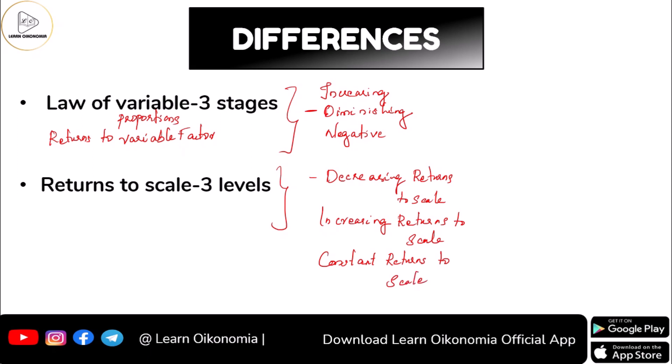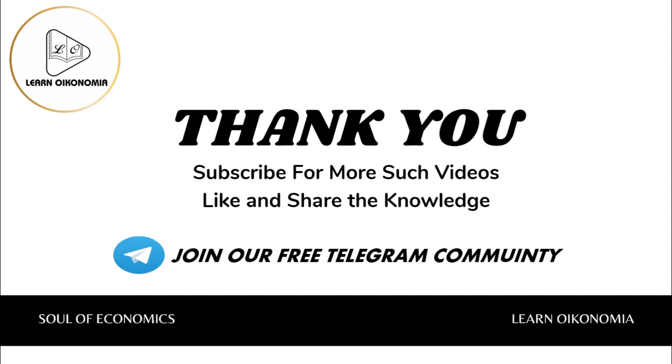Each of these will be discussed in separate videos covering the law of variable proportion and returns to scale, explaining the three stages and three levels in both short-run and long-run production functions. Thank you for watching. Please like and share this channel. You can join the Telegram community for free discussion and download the Learn Oikonomia app — links are in the description box.